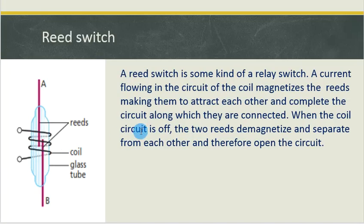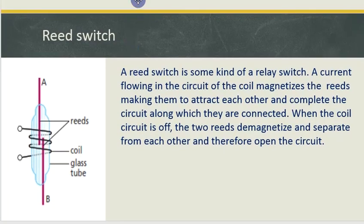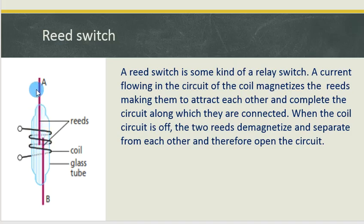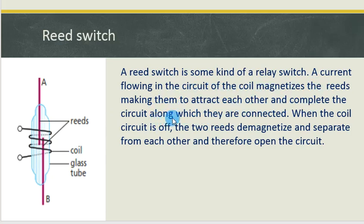Another form of a relay switch is called a reed switch. A reed switch is some kind of a relay switch — a current flowing in the circuit of the coil magnetizes the reeds. As you can see, we have a glass cover, and A and B are called the reeds. They are made from magnetic materials. When current flows through the coil surrounding the two reeds, they get magnetized and attract each other because they form opposite poles — if this end is north, then that will be the south. Once they attract, they are part of a circuit and complete it.